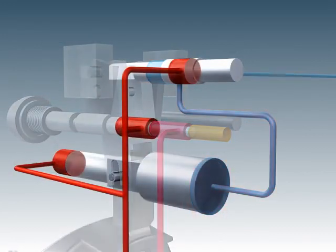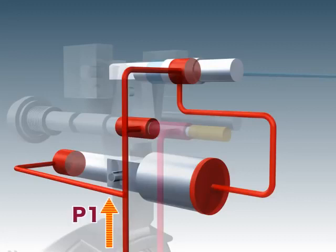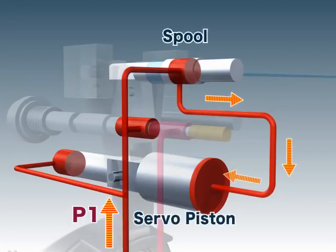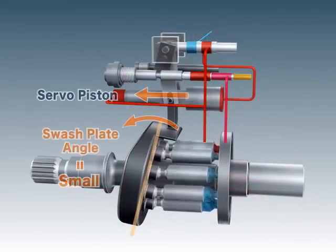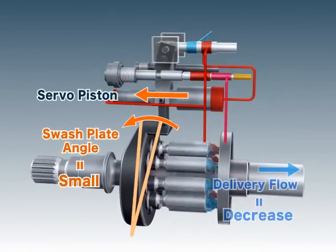Also, the delivery pressure of P1 passes through the spool and pushes against the larger side of the servo piston. As the servo piston moves, the inclination of the swash plate decreases, reducing the delivery flow.